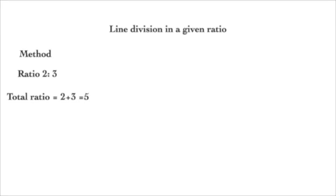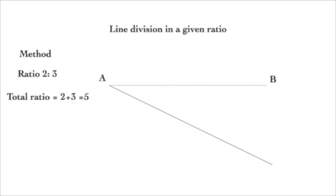First step: draw a line of the given measurement and name the line as AB, or PQ — whatever it may be. In this case I have named the line as AB. Second step: you have to draw another line that makes an acute angle with the given line. No measurement is required — simply draw a line, but that line must make an acute angle with the given line. The given line has to be divided in the ratio 2 is to 3, so the total ratio is 5.